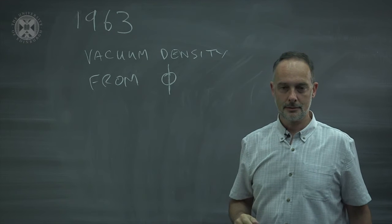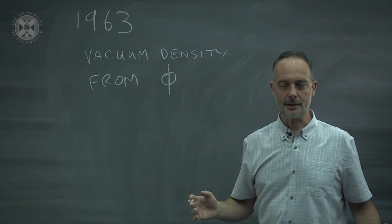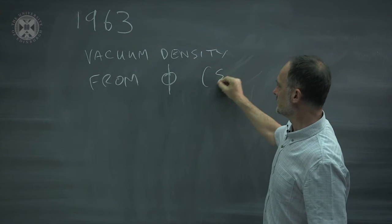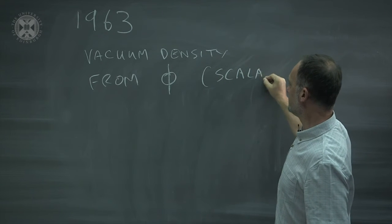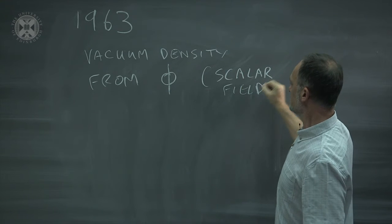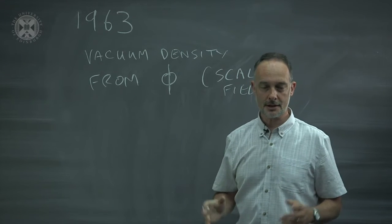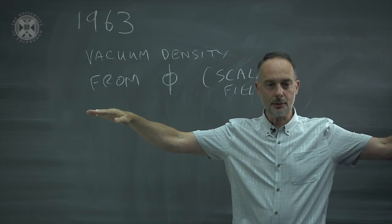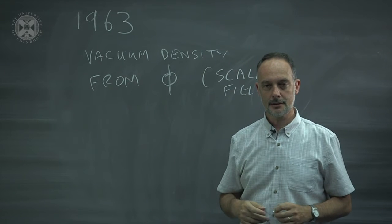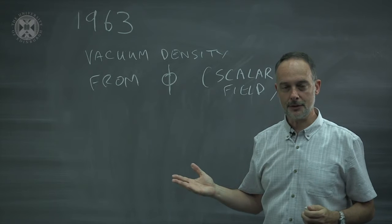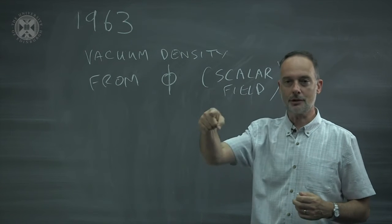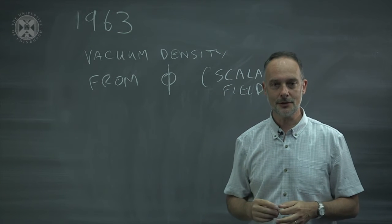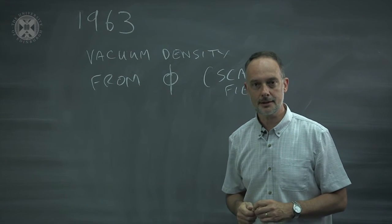Now, nobody knows what the Higgs field is, it's just a thing that fills all of space. It's what we call a scalar field, which just means it's characterized by the value of one number, presumably the same number pretty well everywhere in space, and it's distinct from the electromagnetic field, which is a direction at every point in space. We don't know what the electromagnetic field is either, so physics is full of these things, we just accept that they exist.